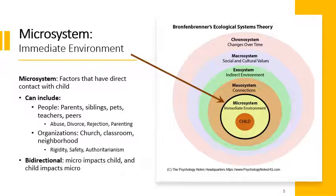The first system Bronfenbrenner identifies is the microsystem. With the child in the middle with all their unique characteristics, the microsystem encompasses all the factors in the child's immediate environment — the conditions that directly interact with and impact the child. For young children especially, this includes parents, siblings, pets, teachers, and peers, all of these interacting directly.